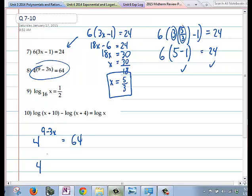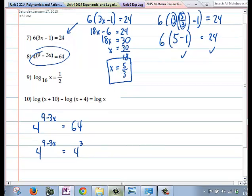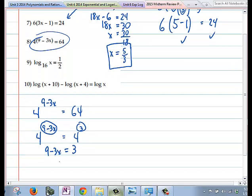So we have 4^(9-3x), and on the other one, we have 4 raised to the third power. So in this case, once you convert the bases to be the same, you just would set the exponents equal to each other. So this is nice. We have 9-3x = 3, and then you would solve. You'd have -3x = -6, x = 2.